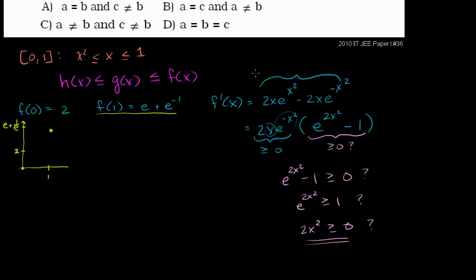The derivative is always ≥ 0 over [0, 1], meaning the slope is never negative — the function is non-decreasing. The slope is 0 at x = 0, so the graph is increasing after that. This tells us that the right endpoint, f(1), is the maximum point. So f(1) = e + e^(-1) is indeed equal to a.